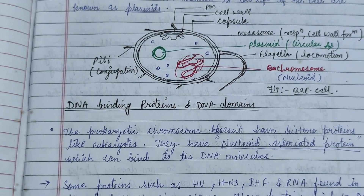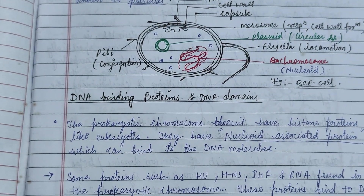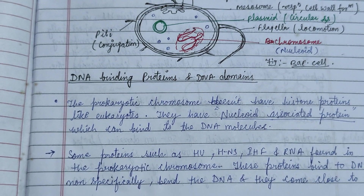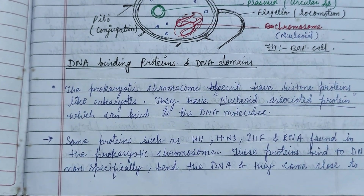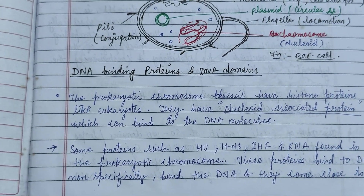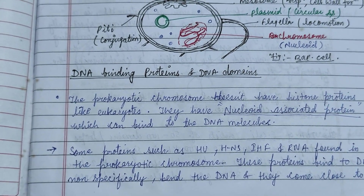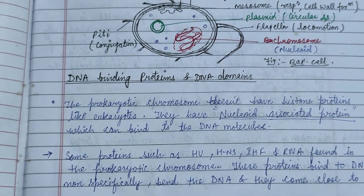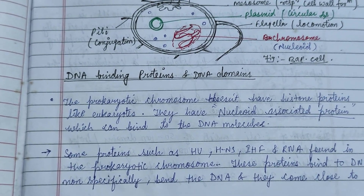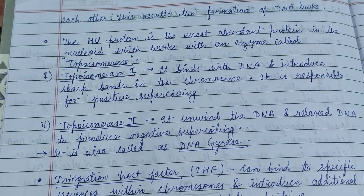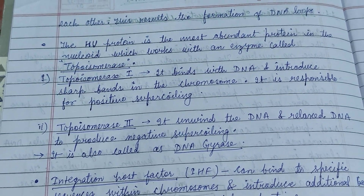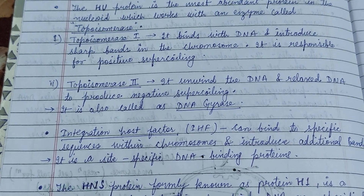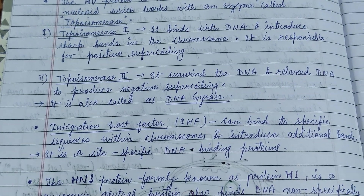This is the general view of the prokaryotic cell. DNA binding proteins and the DNA domains have nucleoid-associated proteins which can bind to the DNA molecule. The nucleoid-associated protein is the alternative form of the nucleus. Here we are discussing the DNA domains and their proteins and enzymes involved in this DNA.